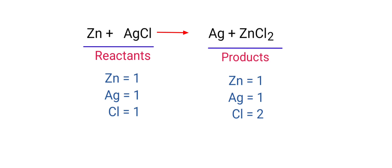In the reactants side, there are one zinc atom, one silver atom, and one chlorine atom present. And in the products side, there are one zinc atom, one silver atom, and two chlorine atoms present.